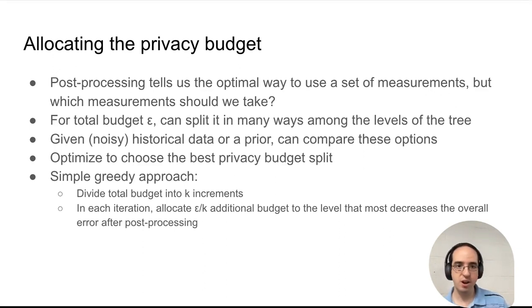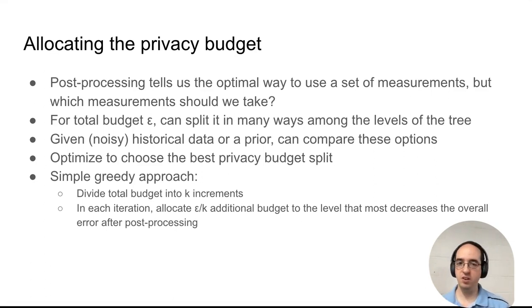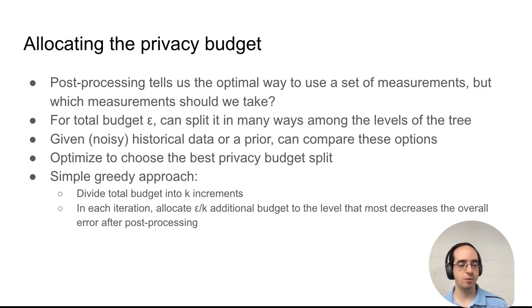Or we could split our privacy budget equally between the different levels of the tree, or use many other strategies. If we have even noisy historical data or a prior on the data distribution, we can evaluate these different options to choose the best budgeting strategy — the best split of our privacy budget epsilon among the levels of the tree.